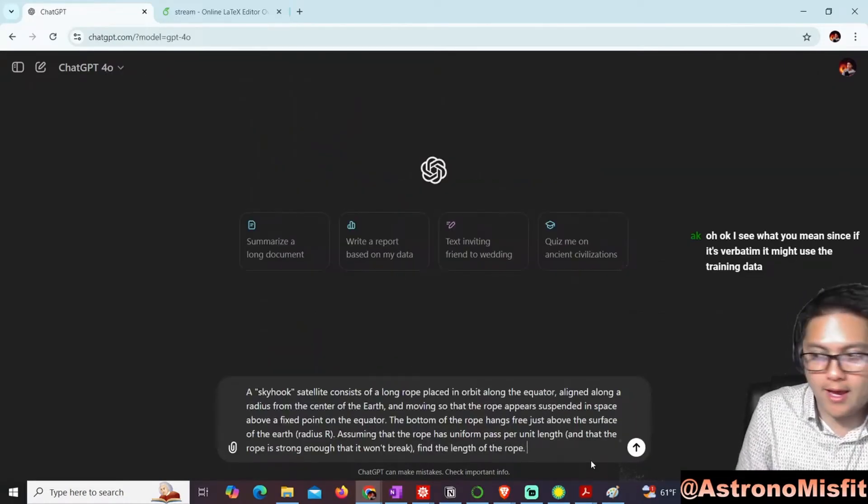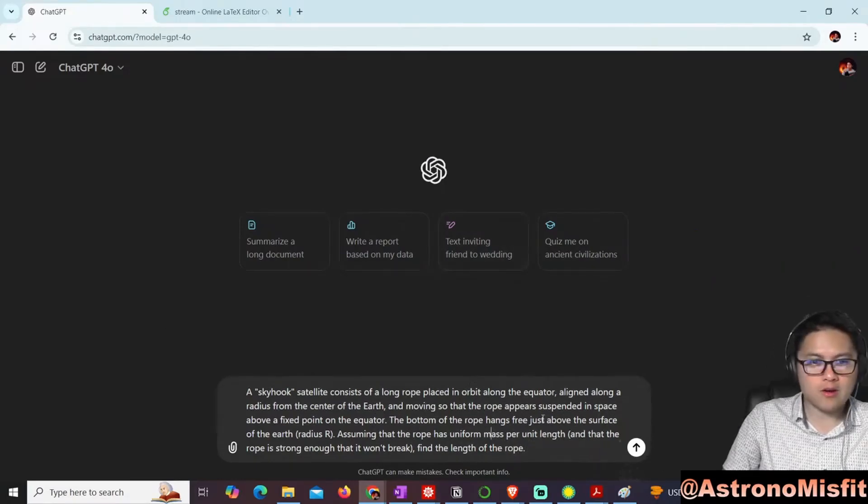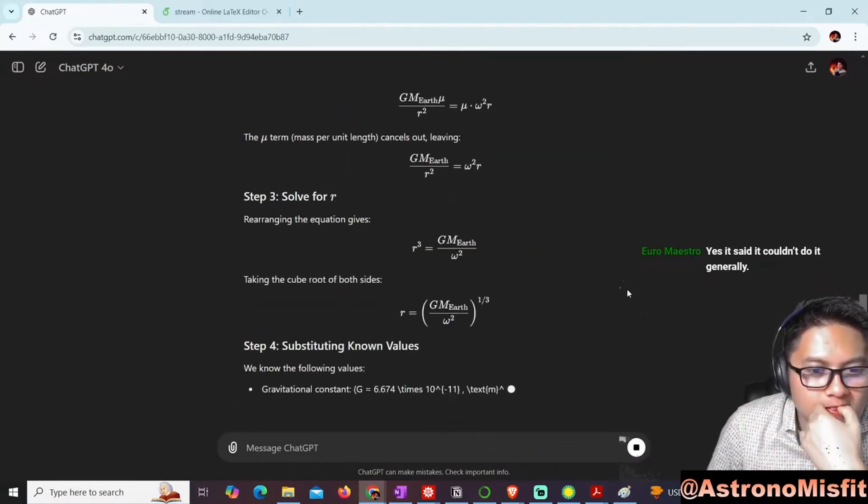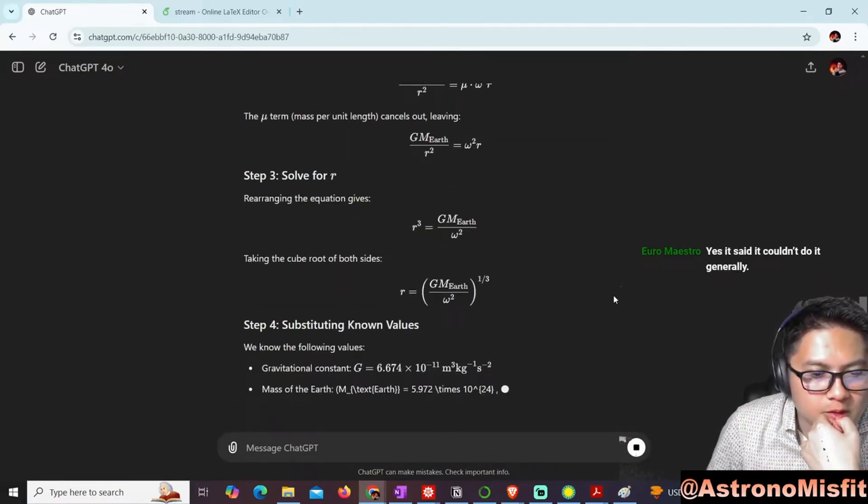The length of the rope... yeah, it says here. Okay, so here we go. New problem for 4.0. We'll give it to 4.0, and then if it gets it wrong, we'll give it to mini. I think this is how we'll do it - we'll just see if 4.0 can do it first. Oh no, this is wrong. This is wrong.